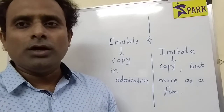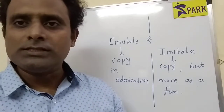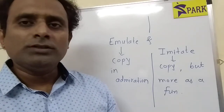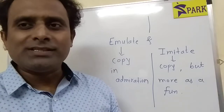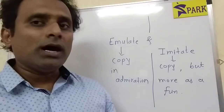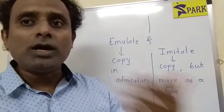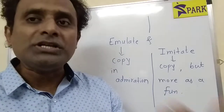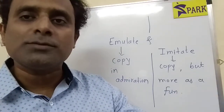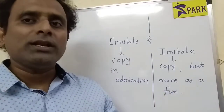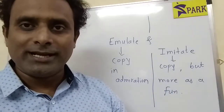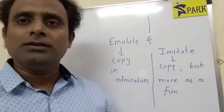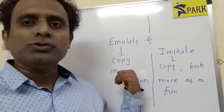Let's look at the word emulate. When I say I emulate someone, it means I follow that person or I copy that person. I emulate someone, which means that I look up to that person, I admire that person. I admire the qualities of that person and I try to be as good as that person. So the word emulate is used when I copy someone in admiration. Mostly it is used in the positive context; the connotation is positive when we use the word emulate.